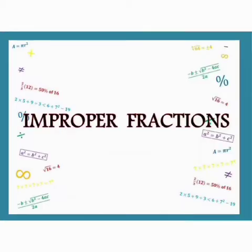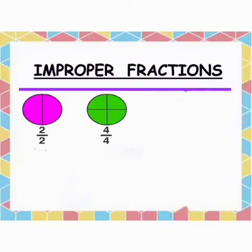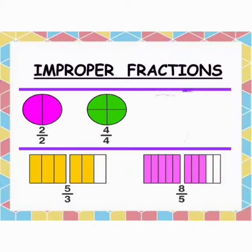Now, let us learn Improper Fractions. A fraction whose numerator is greater than or equal to its denominator is called an Improper Fraction. For example, 2 upon 2 and 4 upon 4 are Improper Fractions because their numerator and denominator are same. Similarly, 5 upon 3 and 8 upon 5 are also Improper Fractions as numerators are greater than denominators.